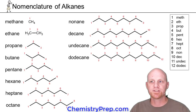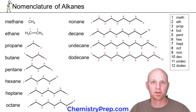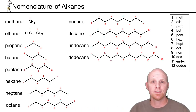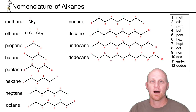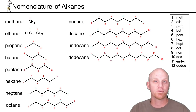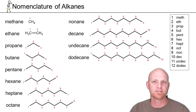We're going to jump into this chapter on alkanes by first starting off with the nomenclature of alkanes. An alkane is a hydrocarbon — so only hydrogen and carbon — that contains no carbon-carbon double bonds or triple bonds, only carbon-carbon single bonds. That's our alkanes.